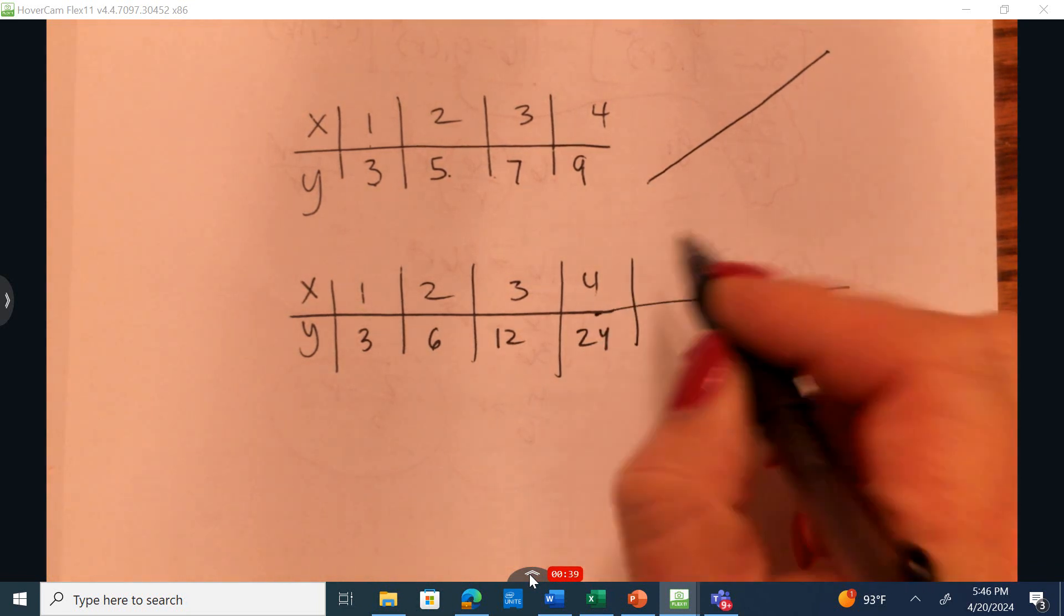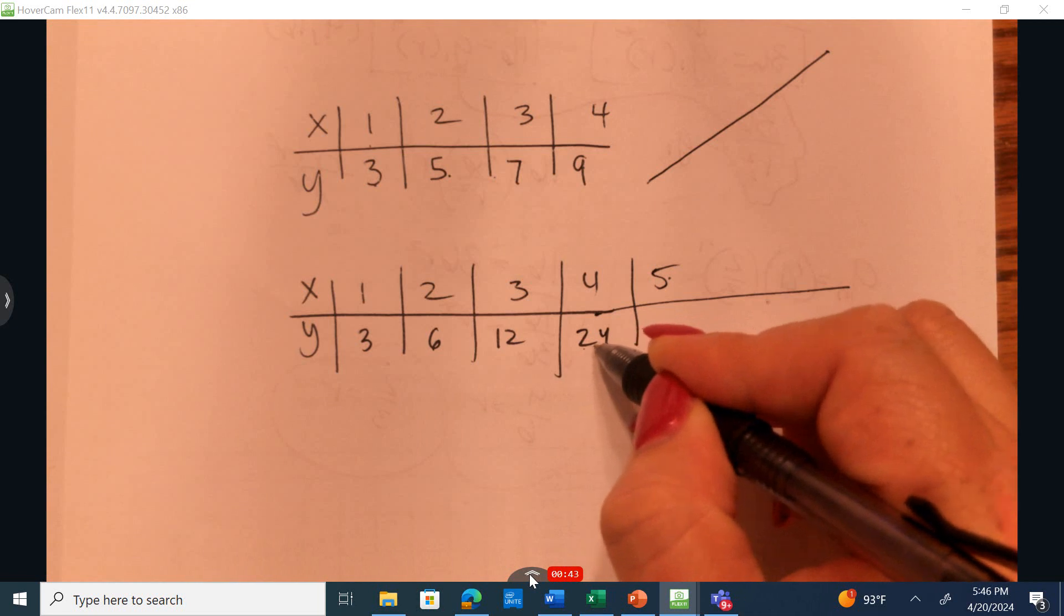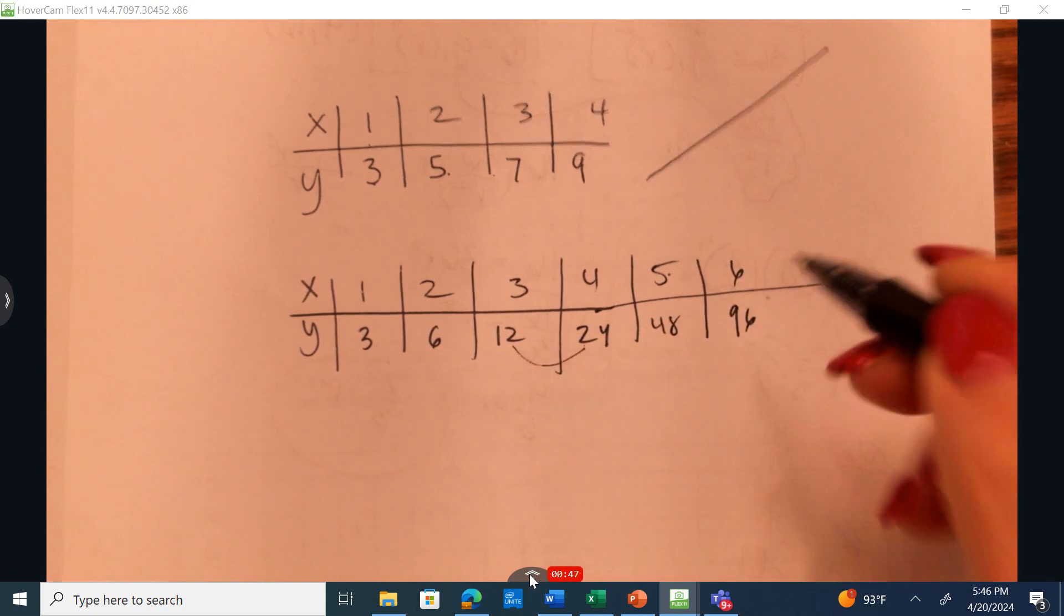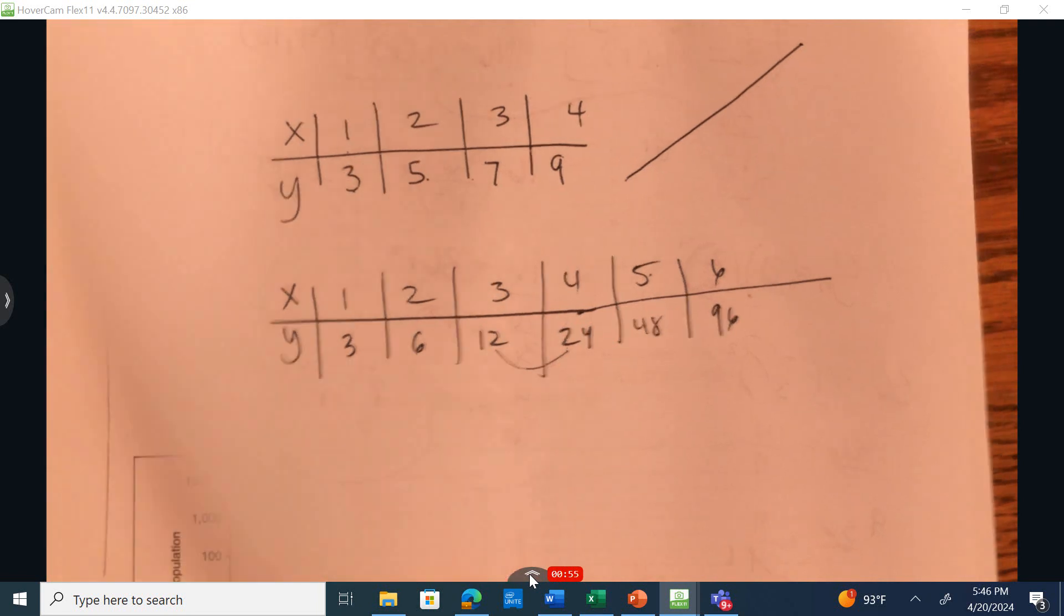It would not be as easy to graph this. So if I go to 5, I'm multiplying this. Notice this is being multiplied by 2, so this is up to 48, go up to 6, 7, 96. How do I put all of these data points on one graph when we have such a broad range of output values?